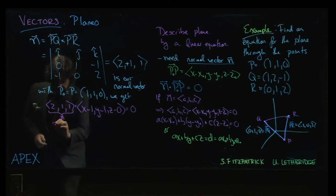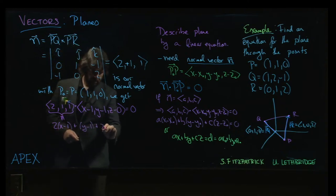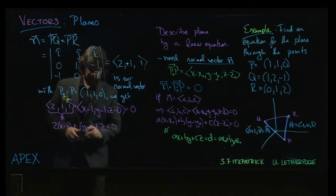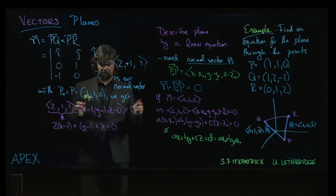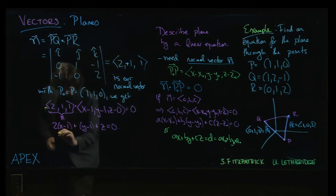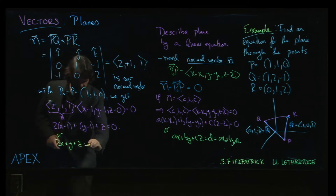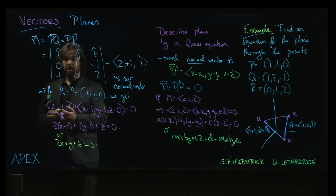And then we multiply out the dot product. So two times X minus one plus one times Y minus one plus one times Z equals zero. That's our standard form. We can stop there. If we want, we could always do one more step to get to the general form. Two X plus Y plus Z. So we get two, so minus two minus one is minus three. If we bring that to the other side, we would get a three.